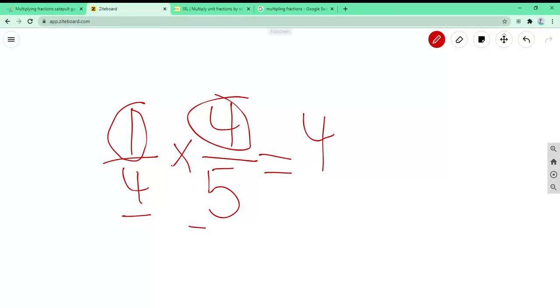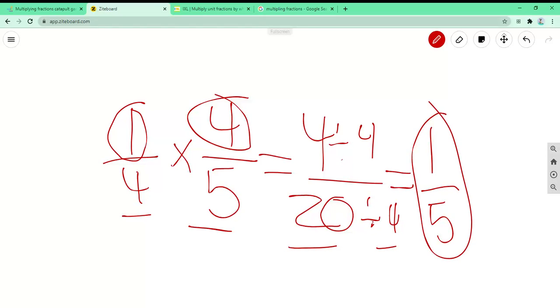And we know that 4 times 5 is equal to 20. So we need to simplify this by 4 and divide it by 4, because they can both divide by 4, which is 1. And 20 divided by 4 is 5. So the answer is 1 fifth.